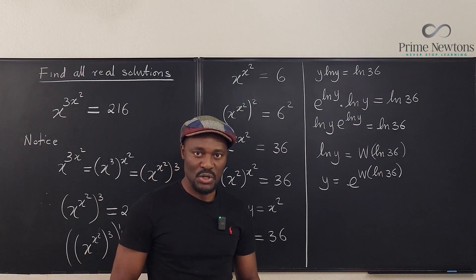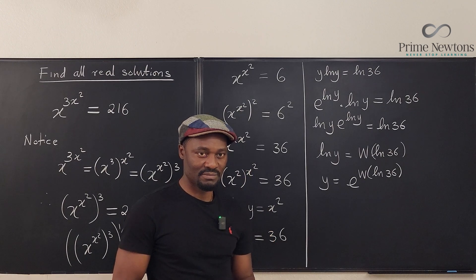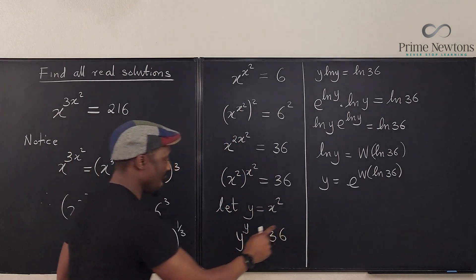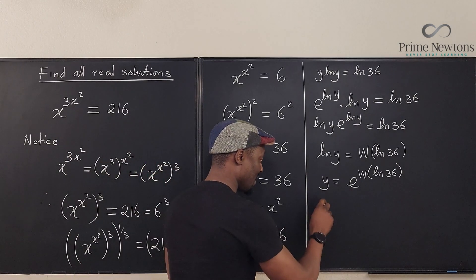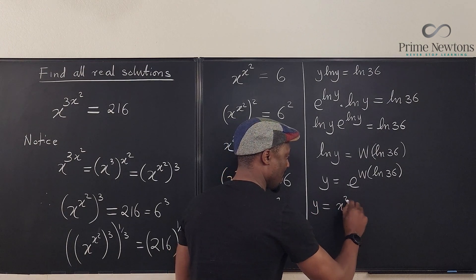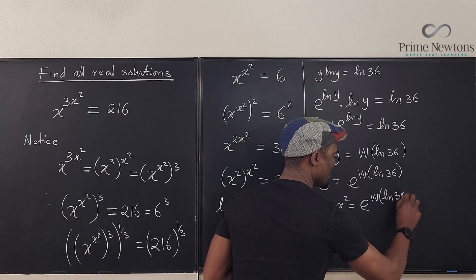There's just one problem. What we're looking for is x. We're not looking for y. So here we go. y equals x². So this has to be equal to y is equal to x², which is e to the w of the natural log of 36.